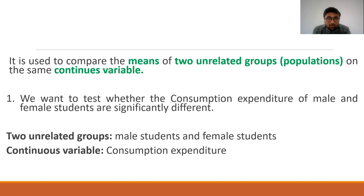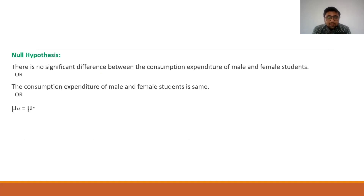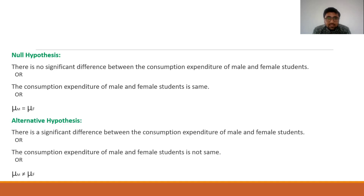Now, what is the null hypothesis? The null hypothesis is there is no significant difference between the consumption expenditure of male and female students, or the consumption expenditure of male and female students is the same. Against the alternative hypothesis that there is a significant difference between the consumption expenditure of male and female students, or the consumption expenditure of male and female students is not the same.